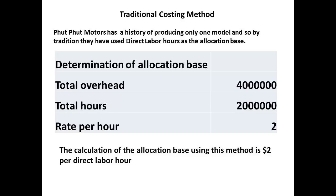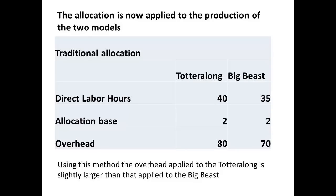The information presented to the chief accountant had determined allocation of fixed overhead using direct hours as the allocation base. A total overhead of $4 million was allocated using 2 million direct labour hours, to give a rate of $2 per hour for allocation. This rate was applied to the two models. The totter-along moped, a leading seller, required 40 direct labour hours, and so each moped was allocated a unit cost of $80 fixed overhead. The big beast required 35 hours and was allocated fixed overhead to give a unit cost of $70.